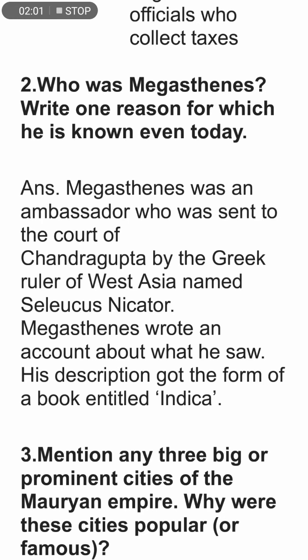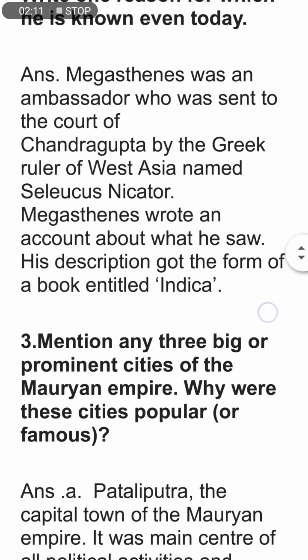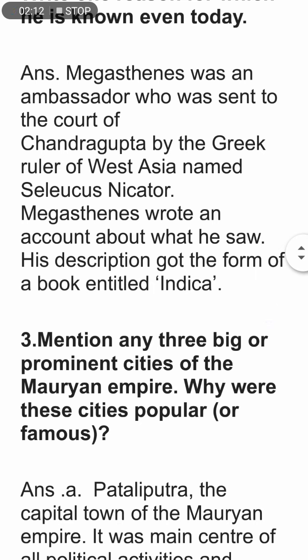Who was Megasthenes, and why is he known even today? Megasthenes was an ambassador sent to the court of Chandragupta Maurya by the Greek ruler of West Asia named Seleucus Nikator. Megasthenes wrote an account of what he saw, and his description took the form of a book called Indica.